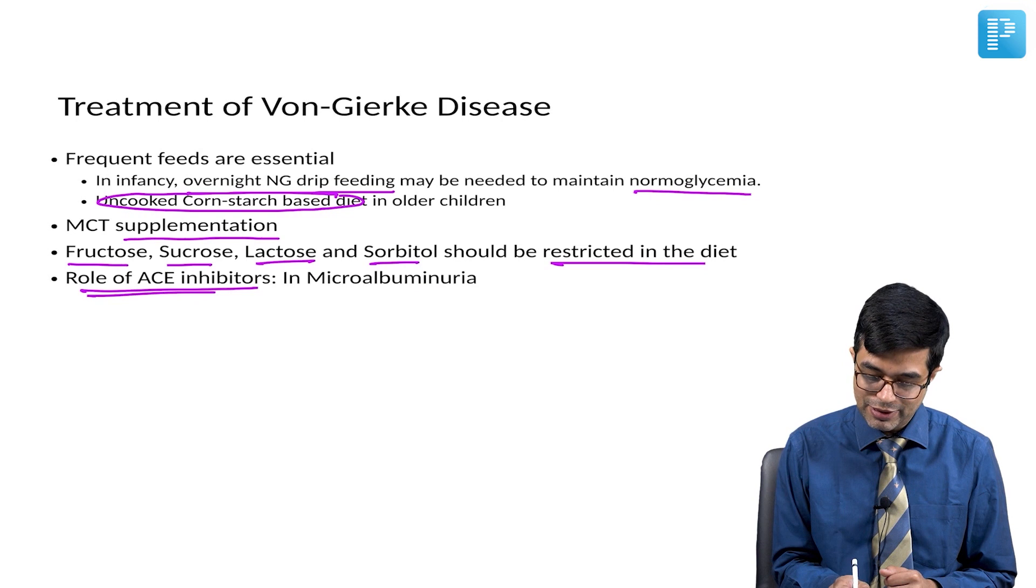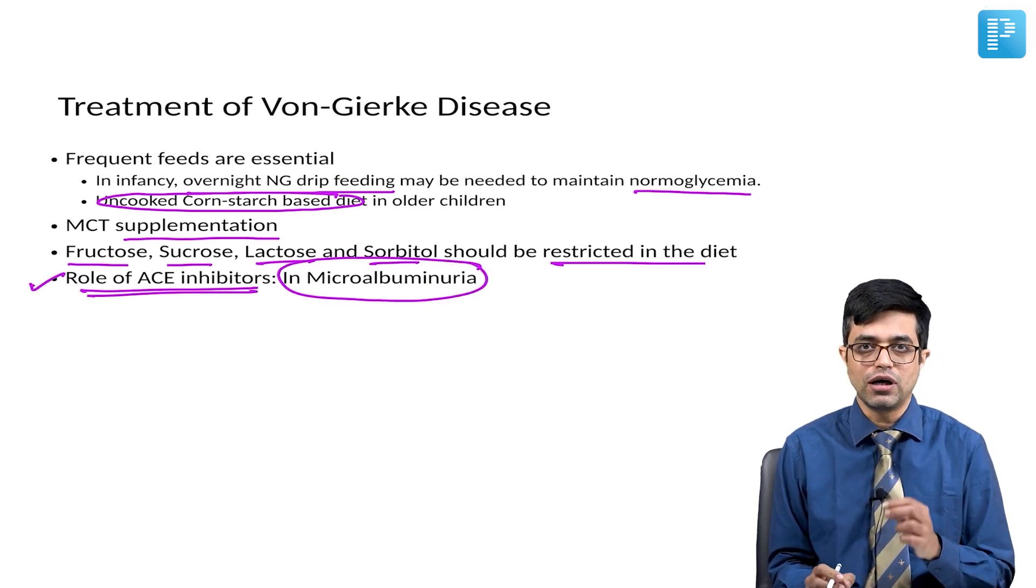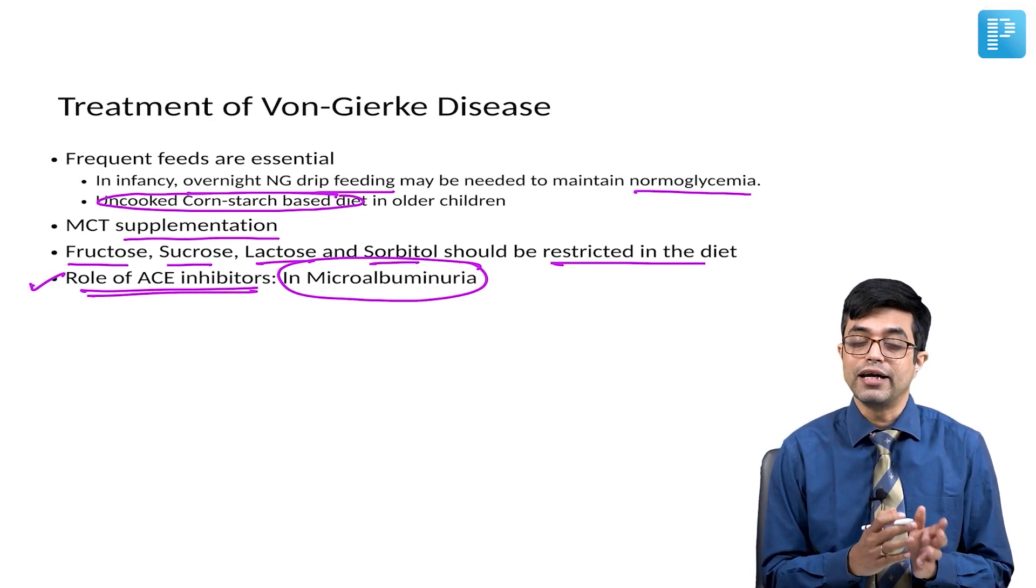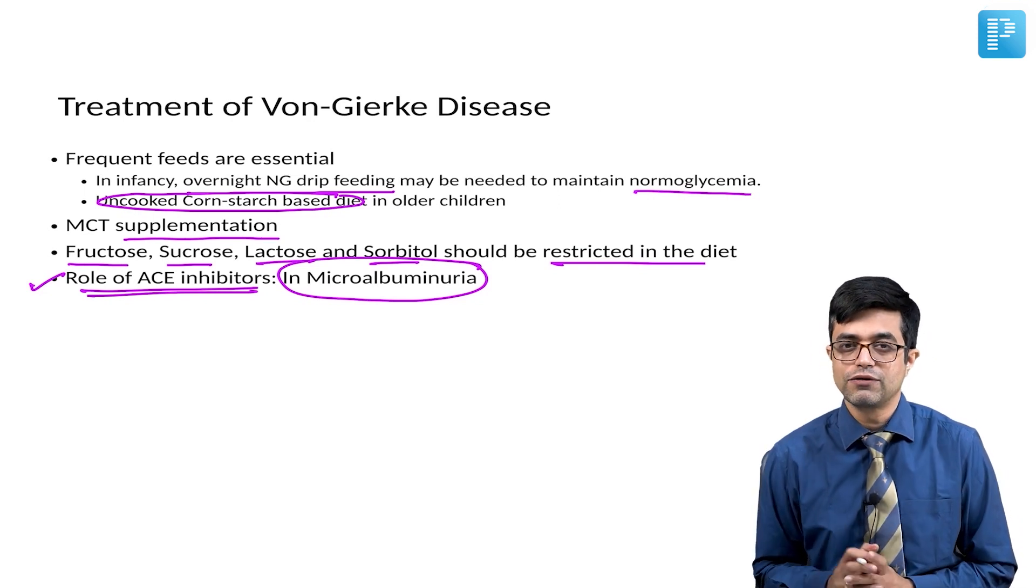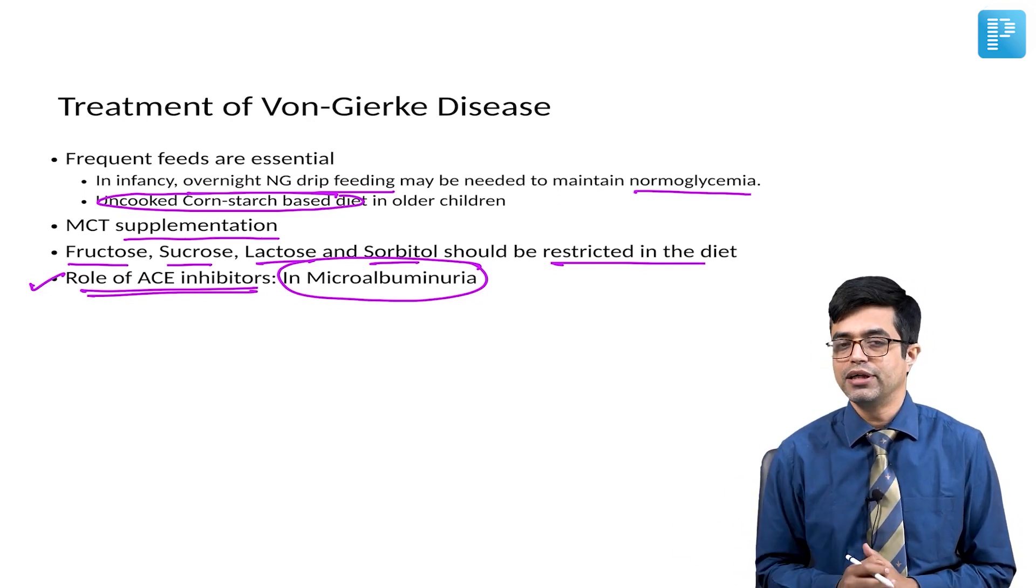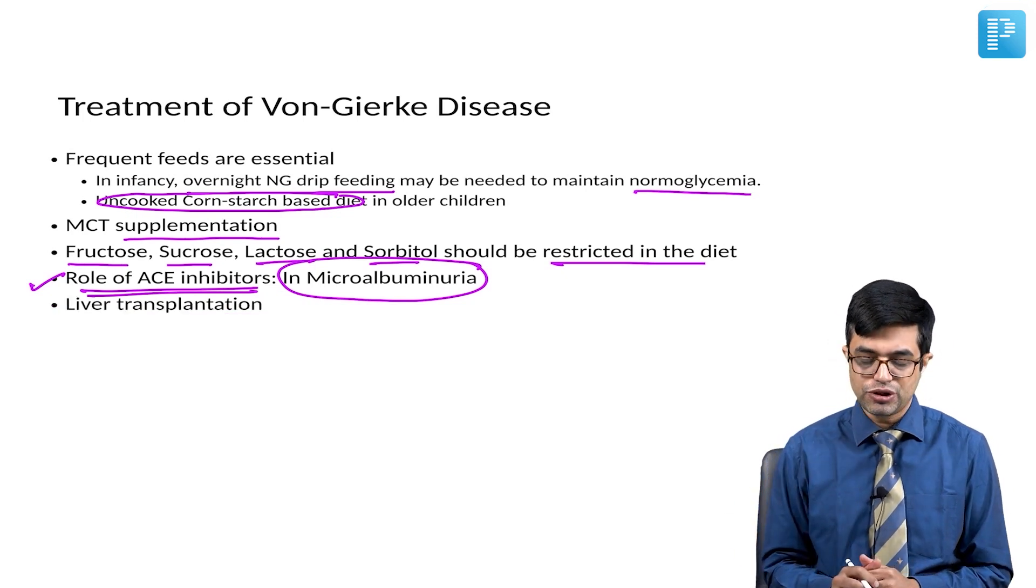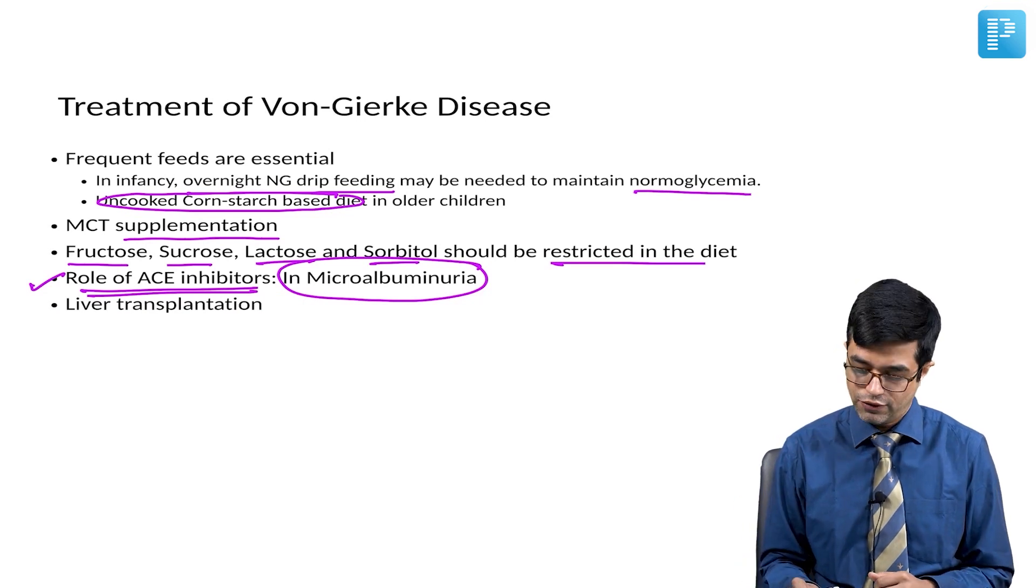What is the role of ACE inhibitors? Enalapril is useful in patients with microalbuminuria. So, early renal involvement responds to proteinuria, responds to enalapril. Enalapril in fact is the only recommended ACE inhibitor for use in these children. Other ACE inhibitors are not recommended, ARBs are not recommended. Liver transplantation of course can be tried, and this is the last step in the management of Von-Gierke disease.